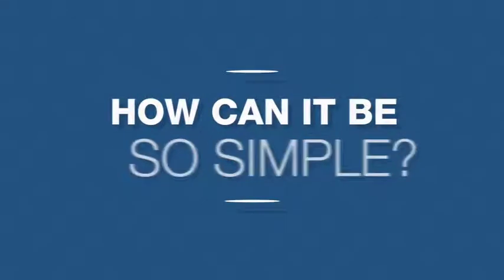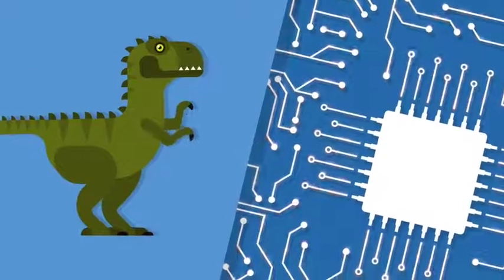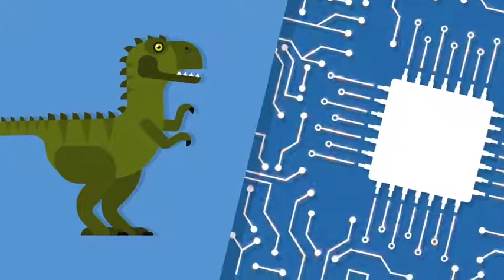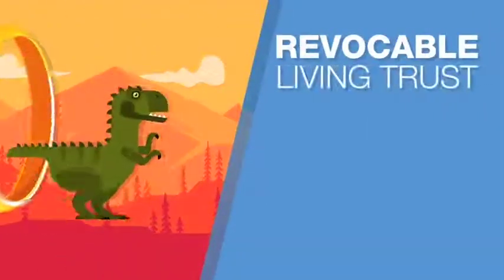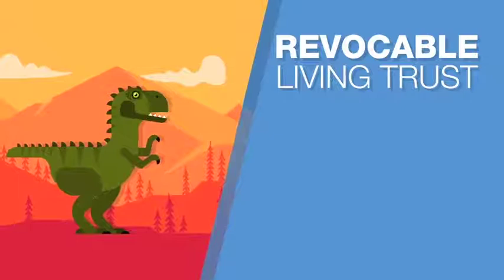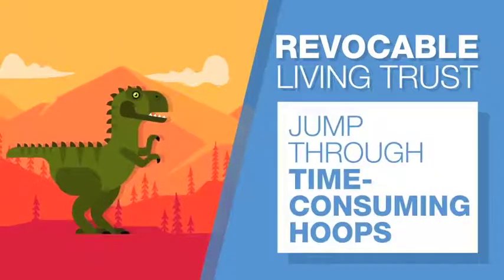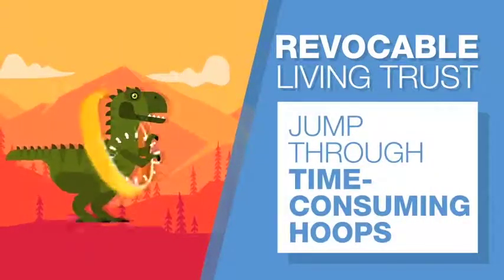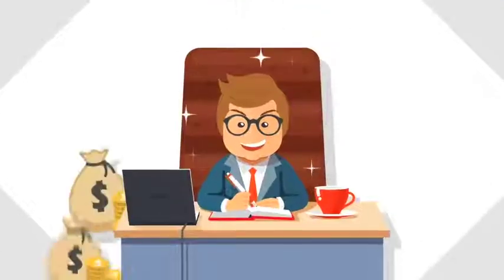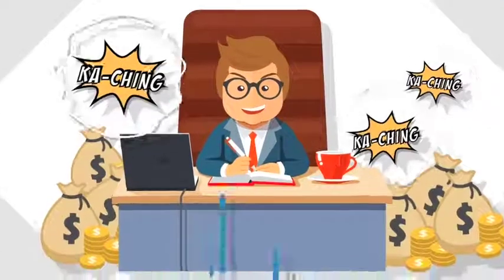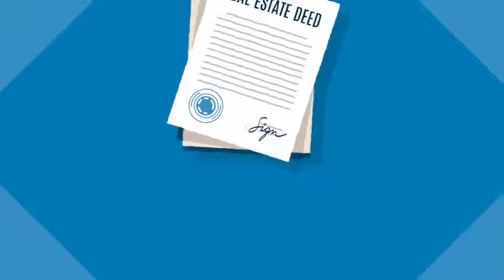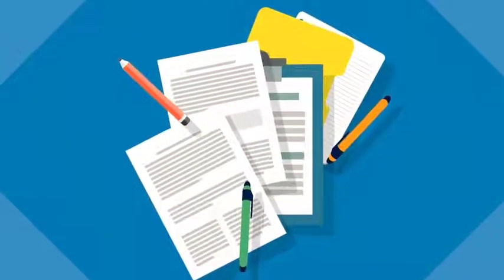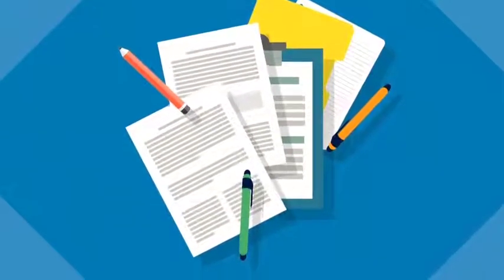Think of it as the difference between the dinosaur age and the digital age. In the dinosaur age of the past, to fund a revocable living trust, you had to jump through a bunch of time-consuming, even aggravating, hoops. You had to wait for an appointment with an expensive trust attorney, you had to re-record real estate deeds, and you had to fill out endless forms to retitle your financial accounts.